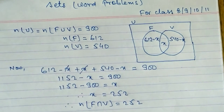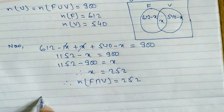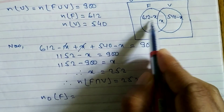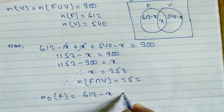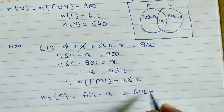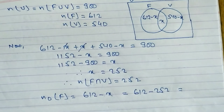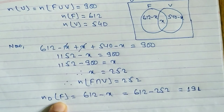In part B, we have to find how many students like football only. Football only equals 612 minus X. We put the value of X, which is 252: 612 minus 252 gives us 360. So 360 students like football only — they don't like volleyball.